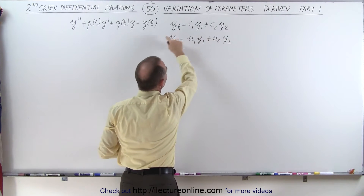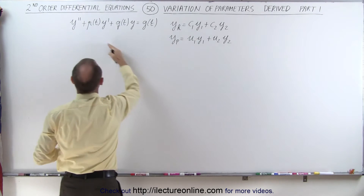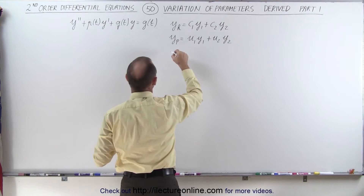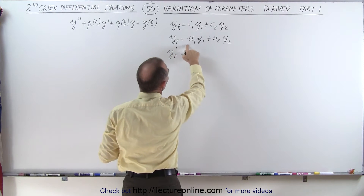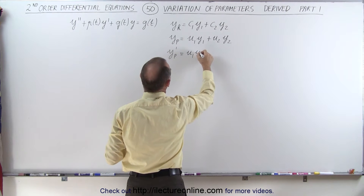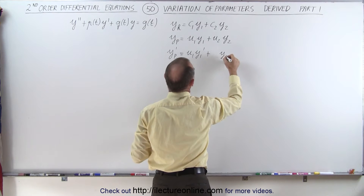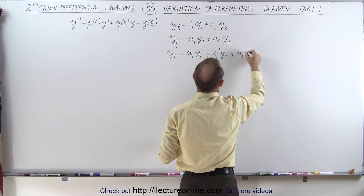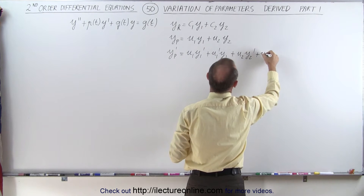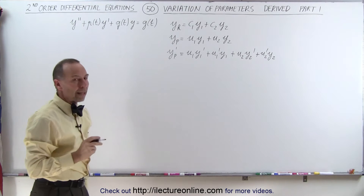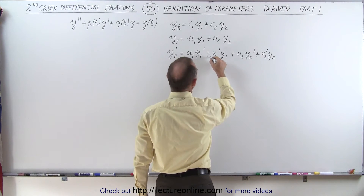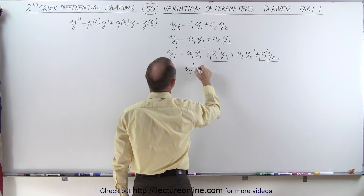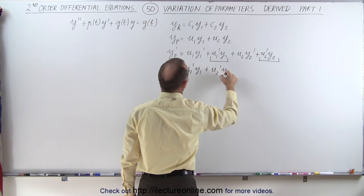Assuming that this is the format of the particular solution, we're going to take the first and the second derivative, plug it back into the equation, and then solve for u1 and u2. So first we take the first derivative. We can write that yp prime is equal to — since these are products — we use the product rule: it'll be the first times the derivative of the second, plus the second times the derivative of the first. Now I'm going to make a claim that the sum of these two terms, u1 prime y1 plus u2 prime y2, are going to equal zero.